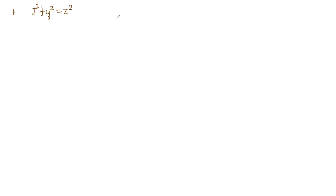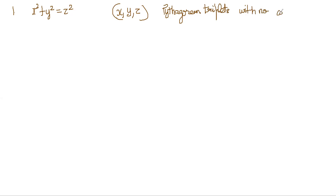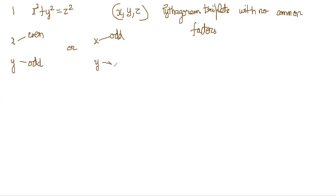Euclid has now proved that if x² + y² = z² and x, y, z are primitive Pythagorean triplets with no common factors, then either x is even and y is odd, or x is odd and y is even.